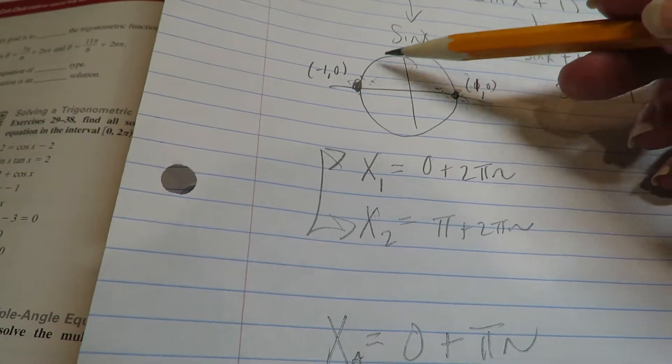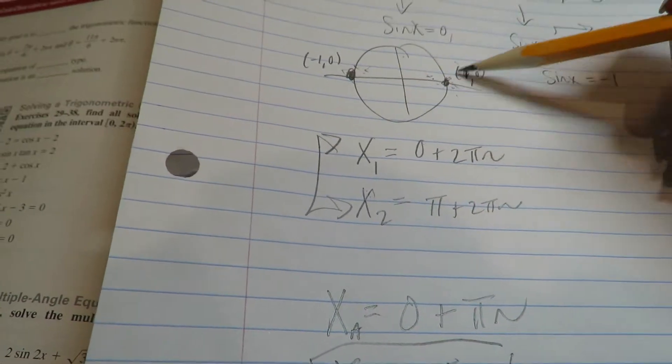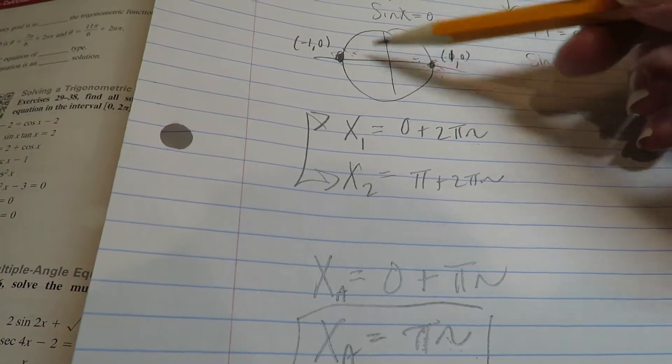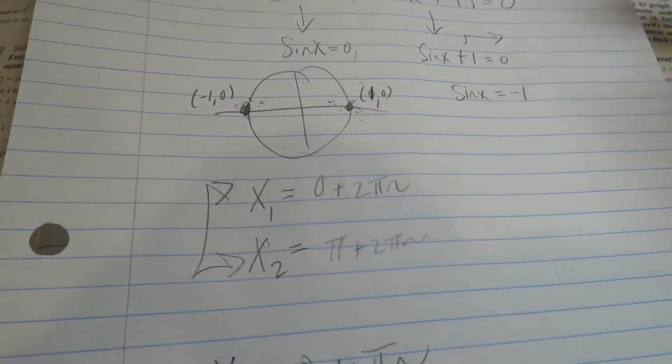Because, remember, it's a repetitive function. It keeps, it's like a merry-go-round. It keeps coming back to the same output values. So you have an infinite amount of times that the sine will be zero if you're allowed to keep going around the circle.